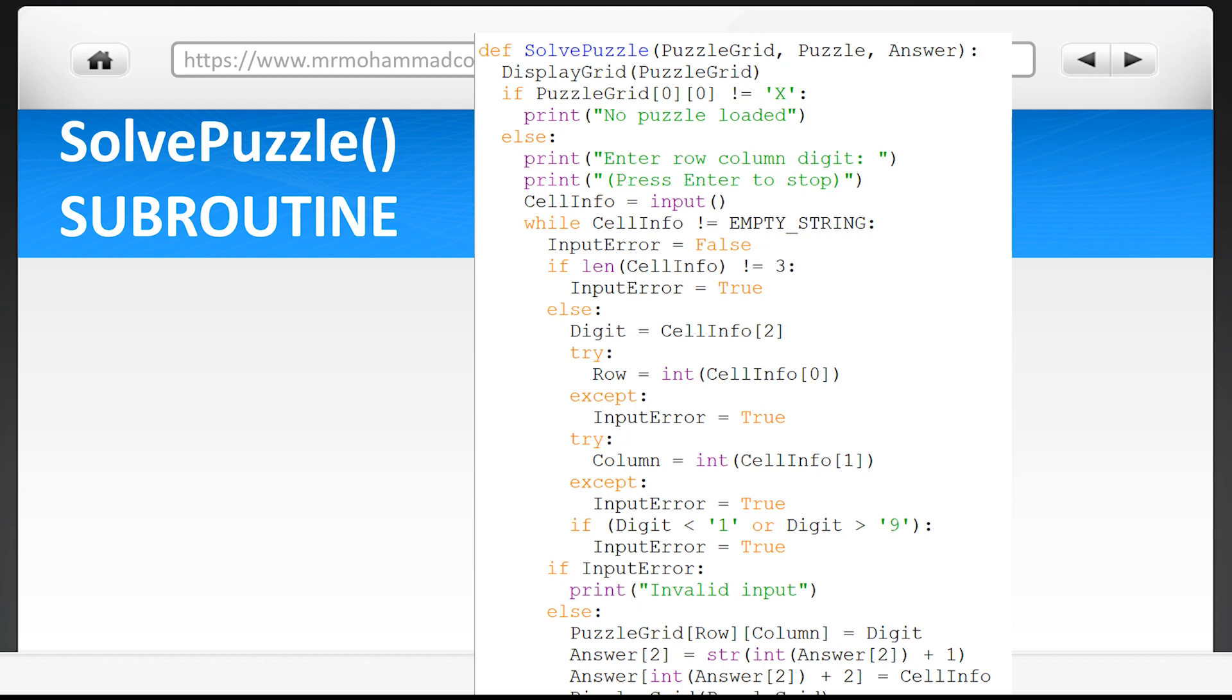The first thing that happens is the user is asked to enter the row, column, and digit. These are three numbers that you can write together with no spaces. First number is for the row, second is for the column, and the third number is for the user's digit. Now remember with indexing, the first position is zero, second is one, and third is two.